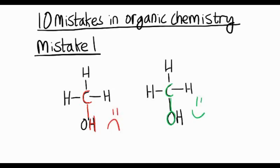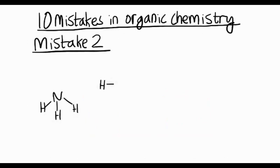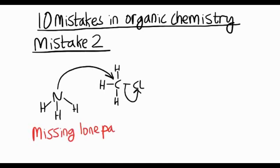Mistake 2 involves curly arrow mechanisms. There are a lot of mistakes with curly arrow mechanisms because they can be quite difficult to learn at first. So we'll react a molecule of ammonia with a molecule of chloromethane and show the mechanism. Can you see the problem here? We're missing a lone pair of electrons on that nitrogen atom. You've always got to include those lone pairs.